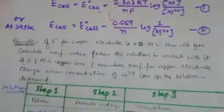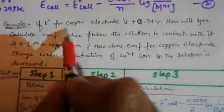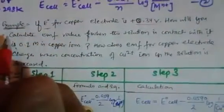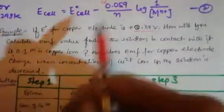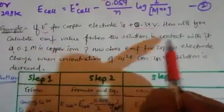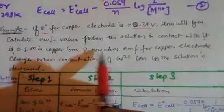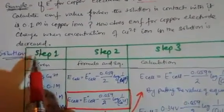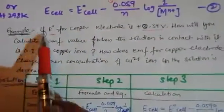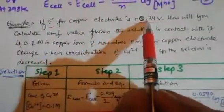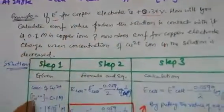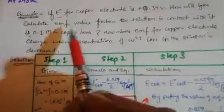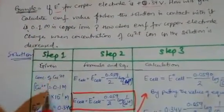Let's take an example. If E° for the copper electrode is 0.34 volt, calculate the EMF when the solution is in contact with 0.1 mole of Cu²⁺ ions. We solve in three steps. Given: E°(Cu²⁺/Cu) = 0.34 volt, concentration of Cu²⁺ = 0.1 mol = 1×10⁻¹ mol, and number of electrons n = 2 (since Cu²⁺ is involved).